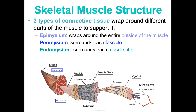When calcium unbinds from troponin, the actin gets blocked again by tropomyosin and the whole process repeats. The contraction cycle begins when ATP energizes the myosin head and is converted to ADP and phosphate, providing the energy. Calcium ions bind troponin and remove the blocking action of tropomyosin, exposing the active site where myosin binds to actin to form a cross bridge. The myosin head pivots using the ATP energy — the power stroke — causing sliding. As new ATP comes in, it detaches and re-cocks to reattach.